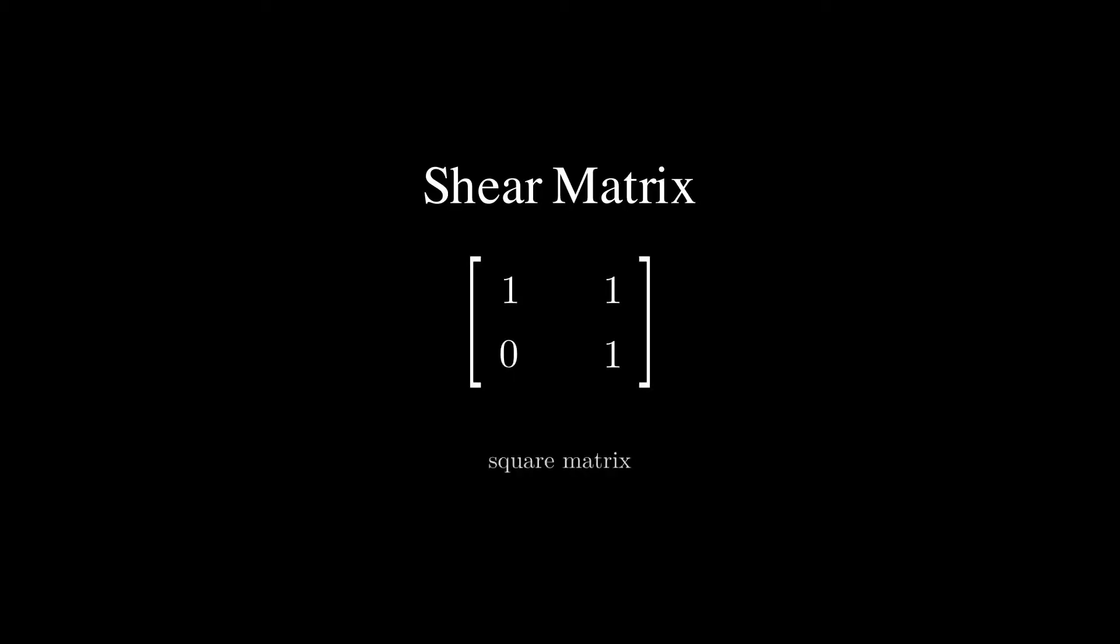Continuing from part 1, we have the shear matrix, which is a matrix that produces a shear transformation. But what is a shear transformation? Turns out it's not the easiest to describe verbally, so you have to see it for yourself. The matrix 1 1 0 1 is a shear matrix, and this is what it does.